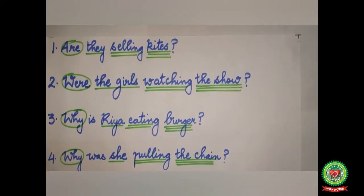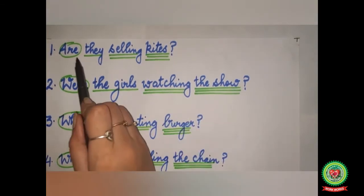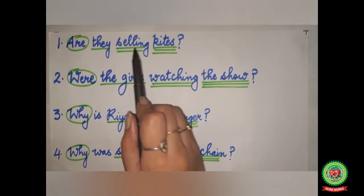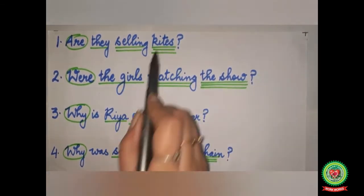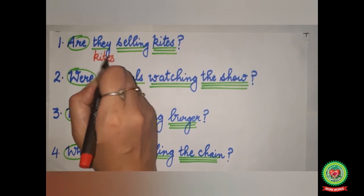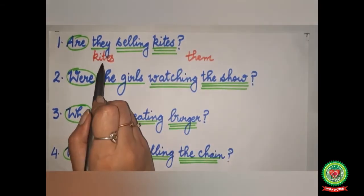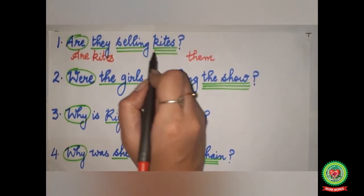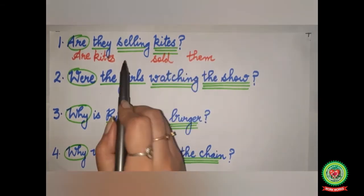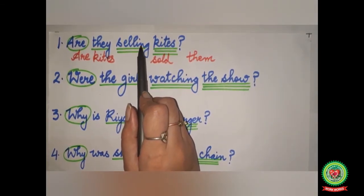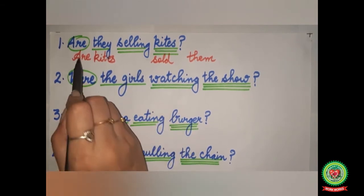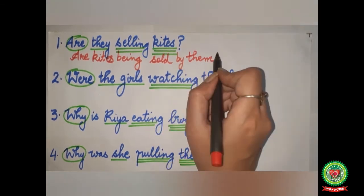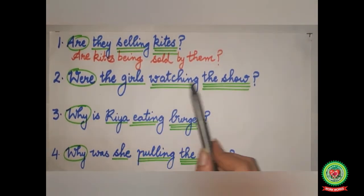Now we will discuss more examples of continuous tense. First example: 'Are they selling kites?' 'Are' is the question word — we have circled it. 'They' is the subject — single underline; 'selling' is the verb — double underline; 'kites' is the object — triple underline. 'Kites' will come in the beginning; 'they' will go to the last and become 'them'. 'Kites' is plural so we will use 'are'. 'Selling' will change to its V3 form 'sold', and we add 'being'. The answer becomes: 'Are kites being sold by them?'